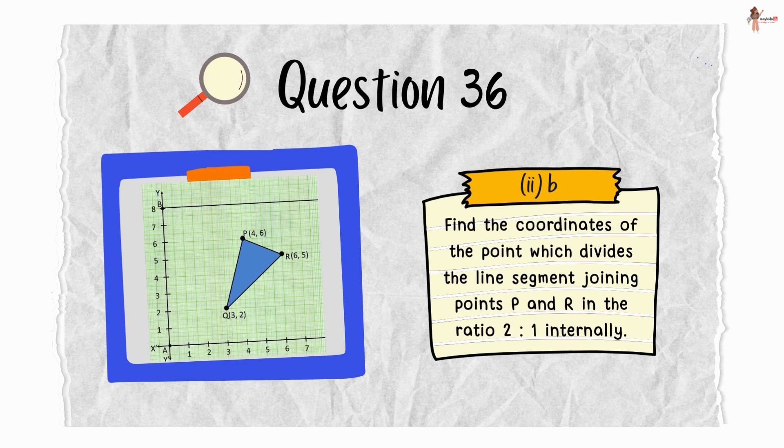Moving on to the next question. Find the coordinates of the point which divides the line segment joining points P and R in the ratio 2 is to 1 internally.